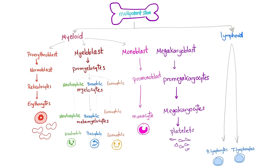White blood cells are derived from stem cells called multipotent hematopoietic stem cells. These will give you the myeloid lineage and the lymphoid lineage. Myeloid includes red blood cells, platelets, and some white blood cells such as neutrophils, basophils, eosinophils, and the monocyte. The lymphoid lineage includes B lymphocytes and T lymphocytes. There is no distinction by the naked eye using microscopy — that's why we need flow cytometry.